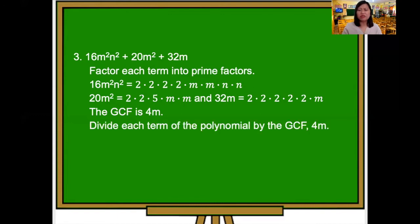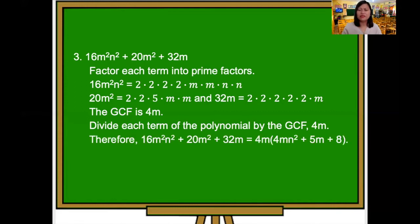We divide each term of the polynomial by the greatest common factor, 4m, to get the other factor. 16m squared n squared divided by 4m is 4mn squared. 20m squared divided by 4m is 5m. 32m divided by 4m is 8. Therefore, 16m squared n squared plus 20m squared plus 32m is equal to 4m times the quantity 4mn squared plus 5m plus 8.